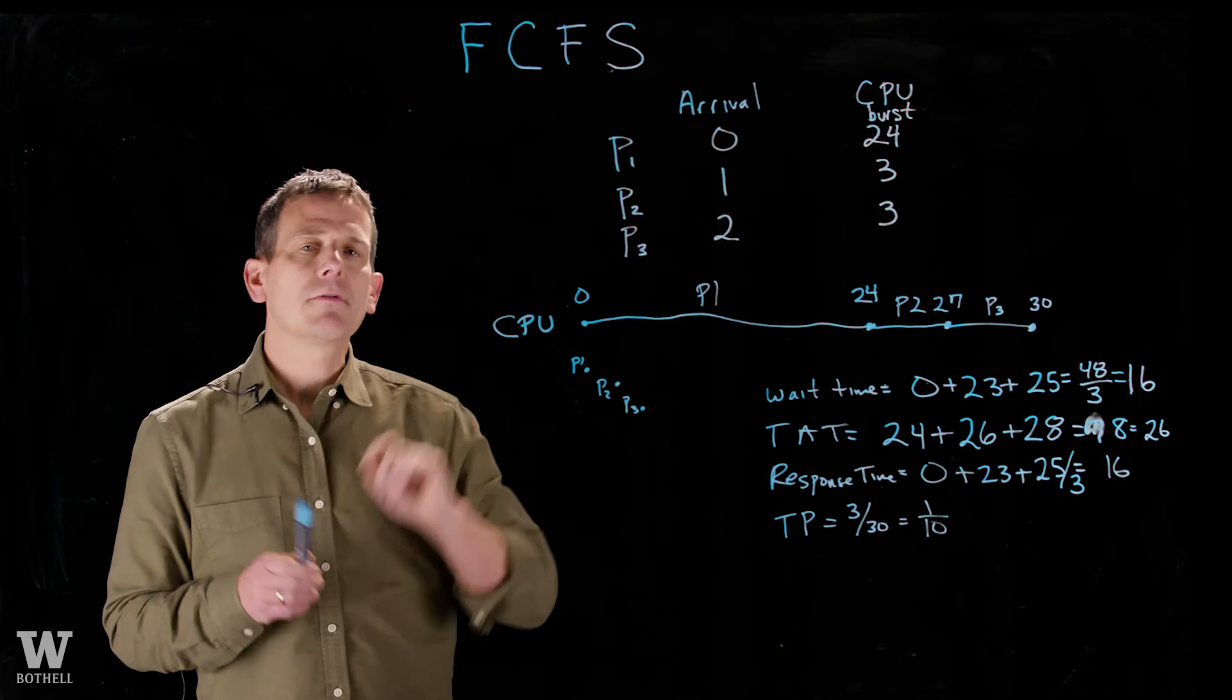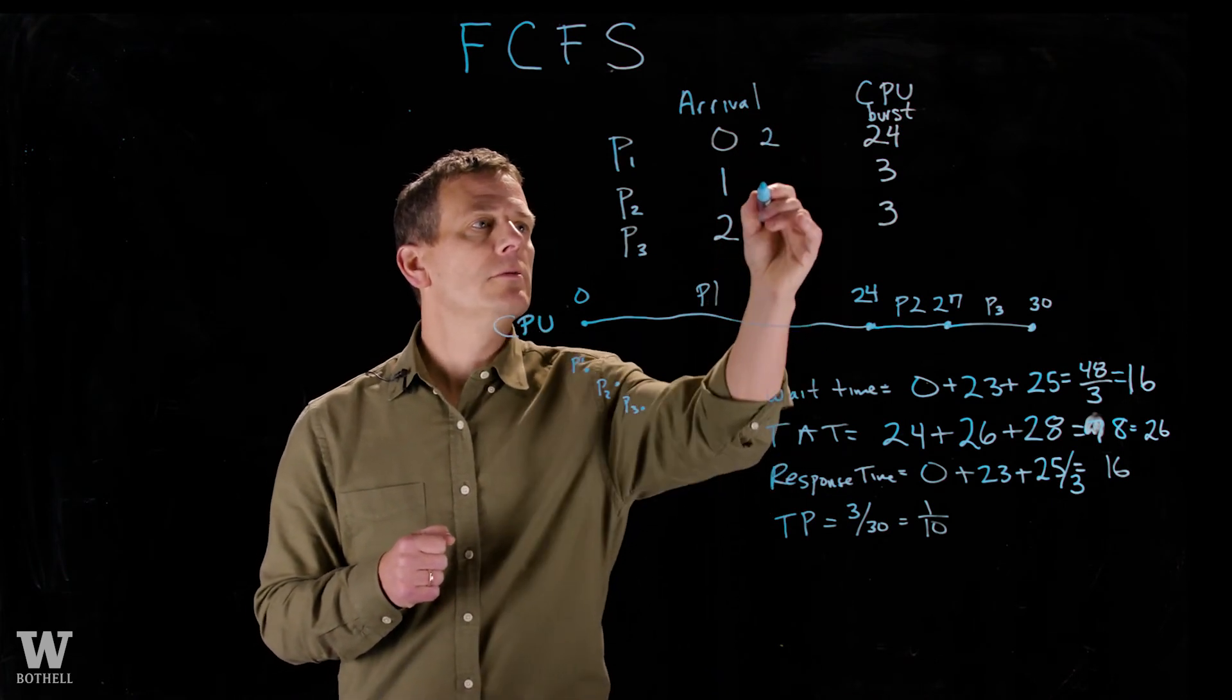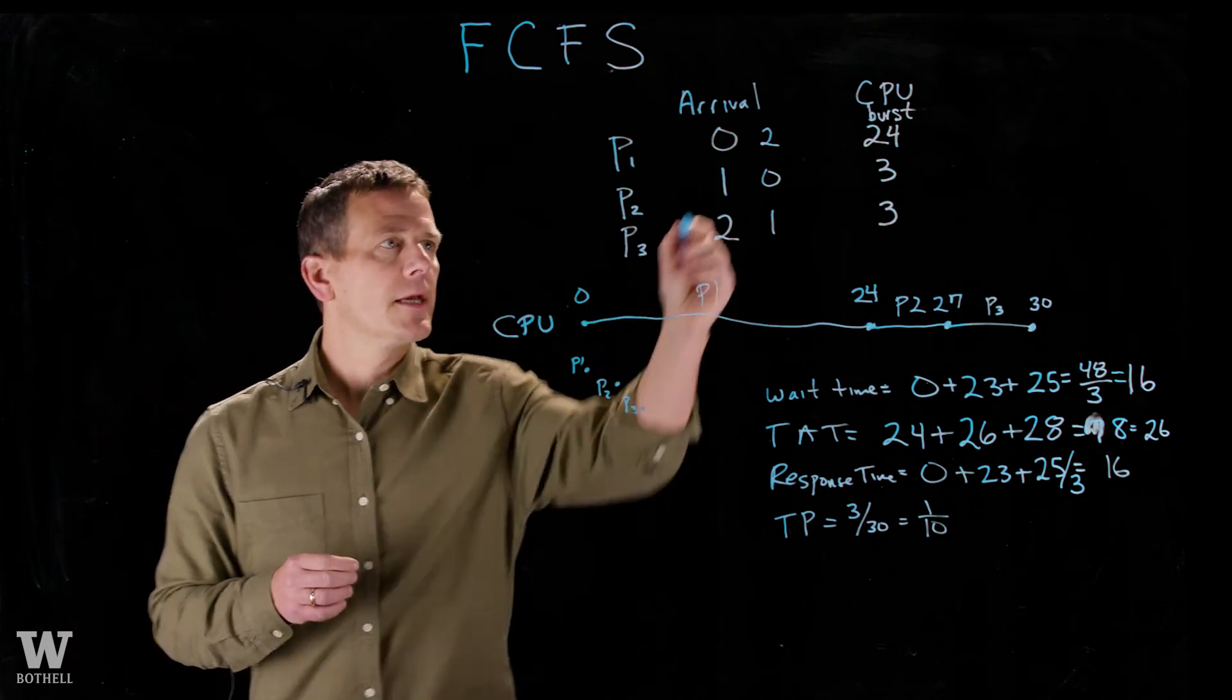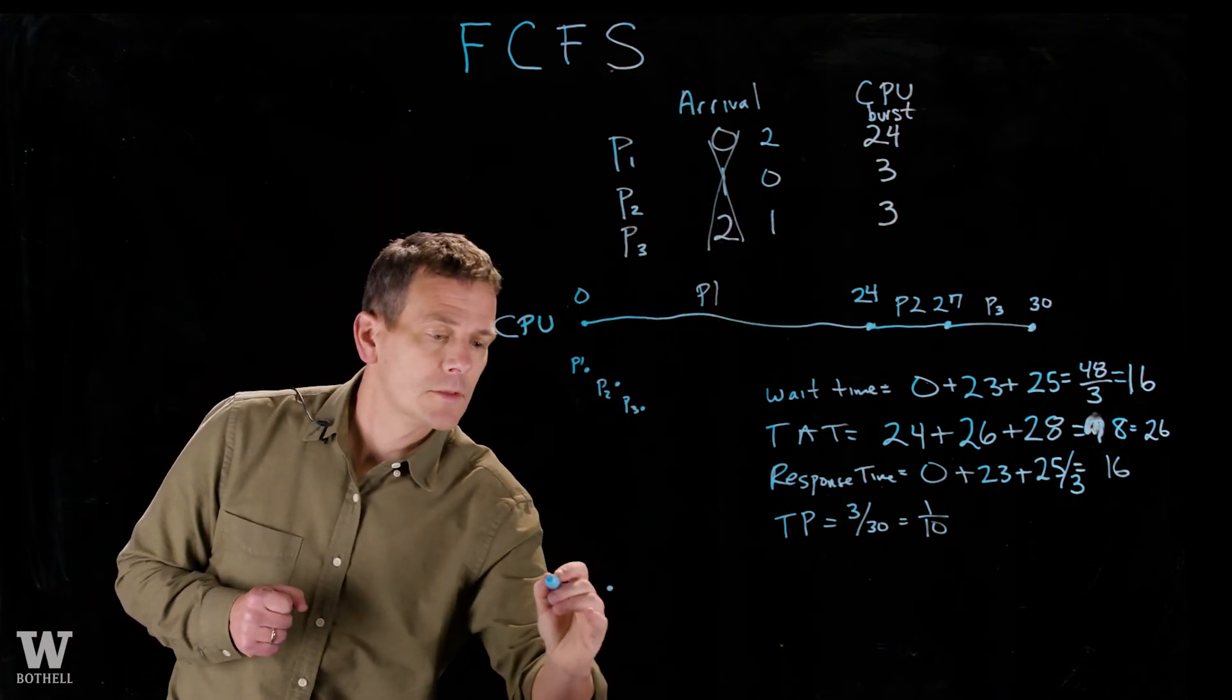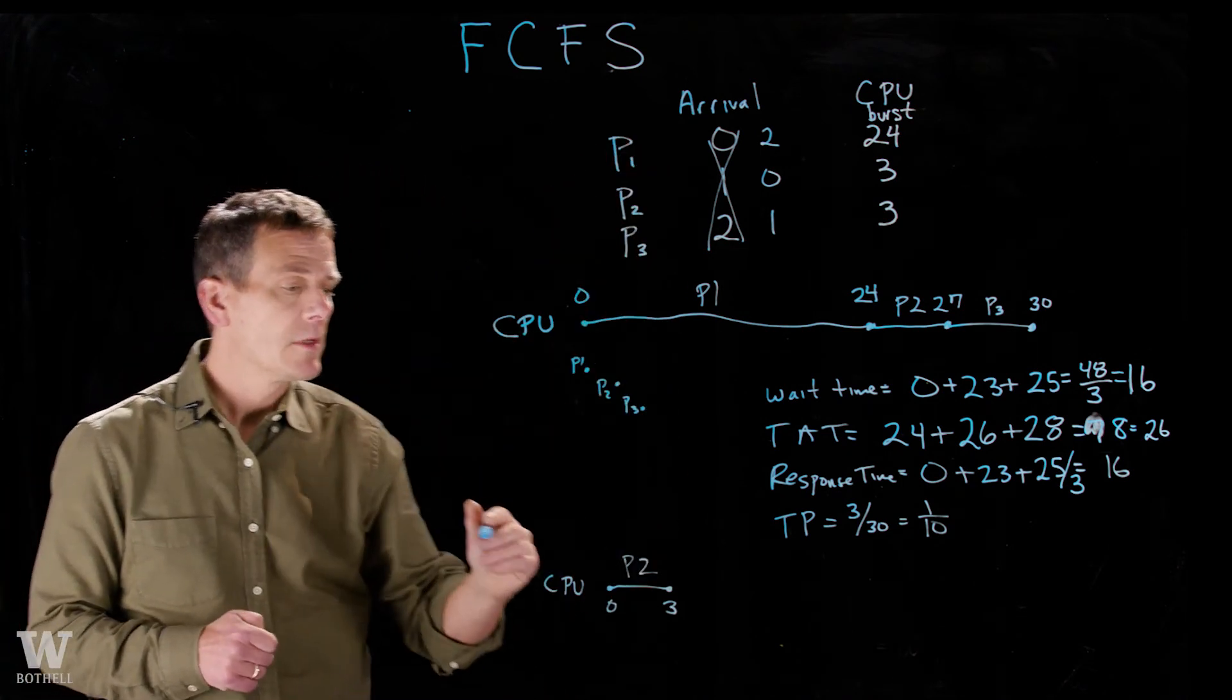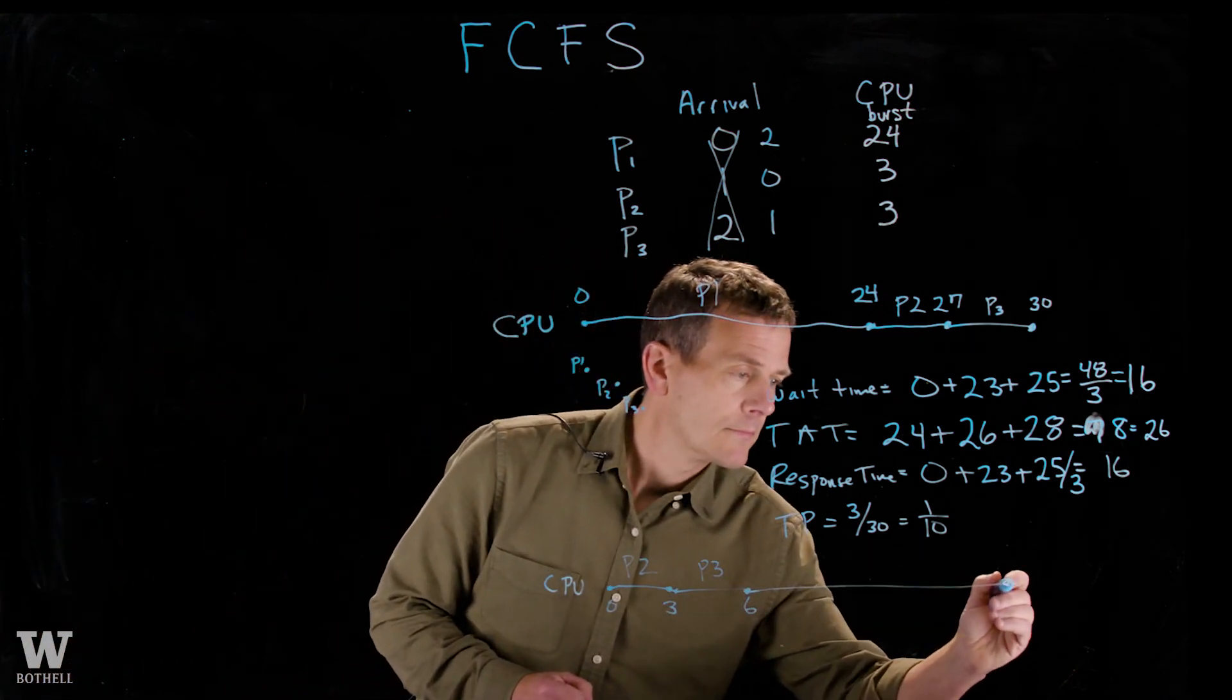What's interesting to note is if instead of entering at 0, 1, and 2, these processes came in at a slightly different time. Let's say process 1 came in at 2, process 2 came in at 0, and process 3 came in at 1. I won't go through all the metrics, but let's figure out the wait time here. So in this case, the first process into the system is process 2, and so it would get three units of time and finish. And then both process 3 and process 1 would be in the system. Process 3 came in next, so it would get the next three units of time. And then finally process 1, our long process, would run until time 30.